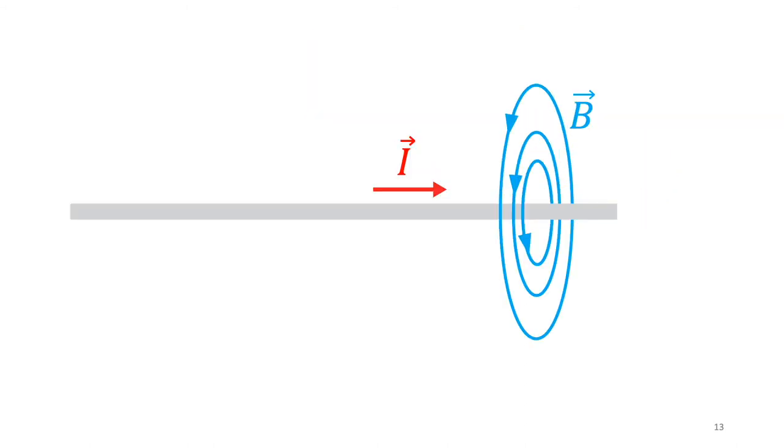For this system, what if we want to measure the magnetic field at point P? Do we have a Coulomb's Law version for magnetic field? It turns out that the analog of Coulomb's Law for magnetism is an empirical equation called the Biot-Savart Law.